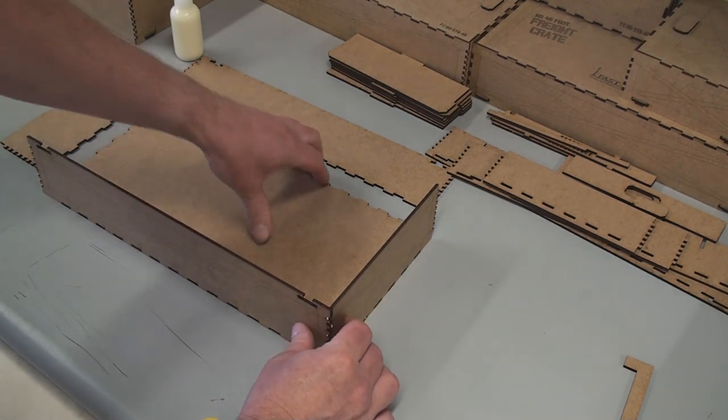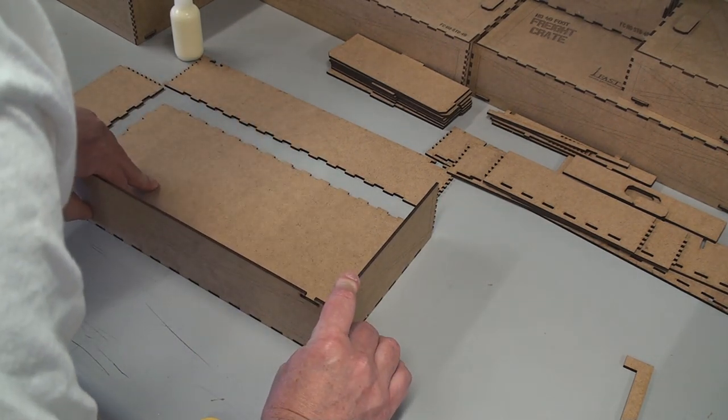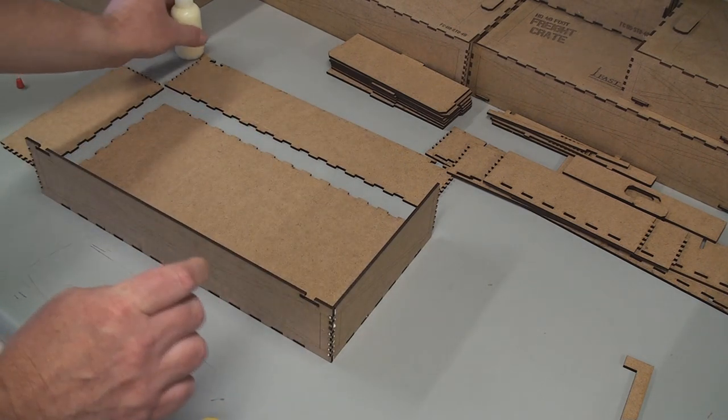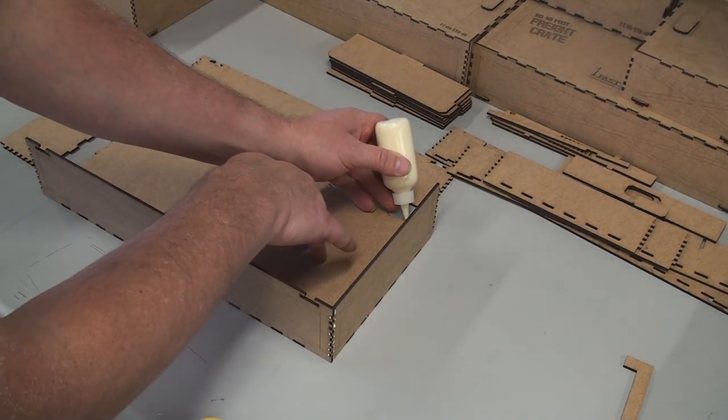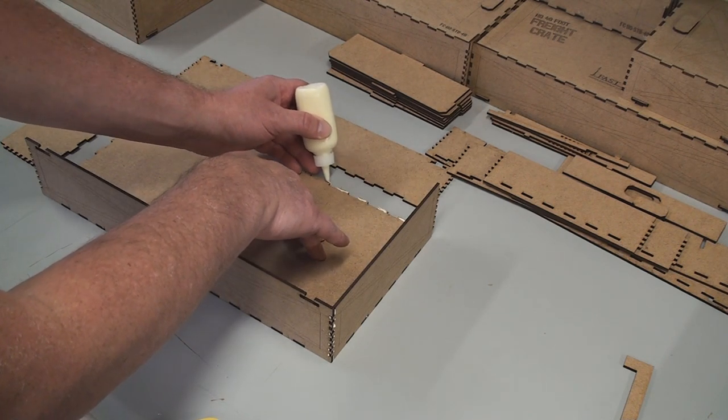Now, I'm not going to stop and clean up any glue at this point. I want to get the other two sides on first, and then I'm going to go and clean all the glue that's dribbling out from some of these glue joints. I like to do this all in one shot.